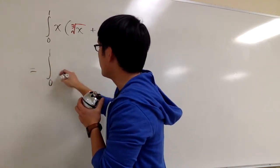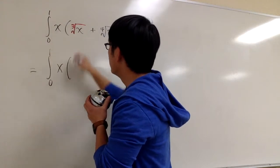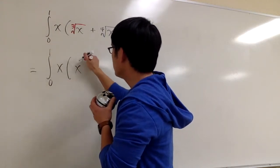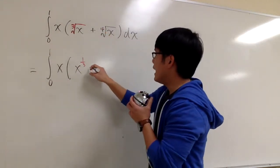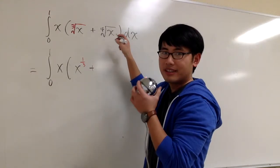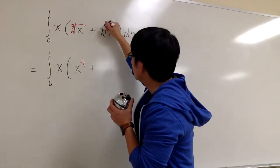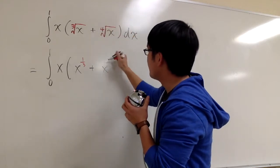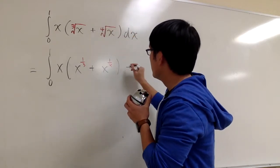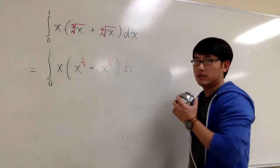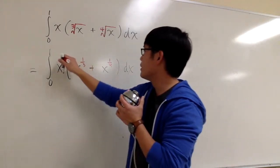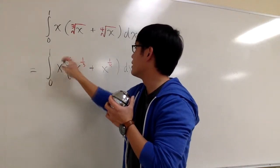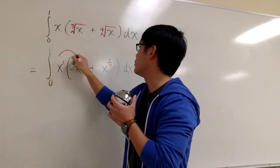This is the integral from 0 to 1. x is just x, but this is x to the 1 third power. And then we add the second part. This is the fourth root. So the fourth root is going to be x to the 1 fourth power dx. And we distribute, this is like x to the first power, and we distribute the first power into the parentheses.